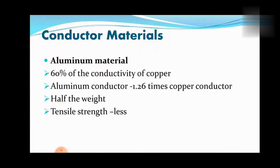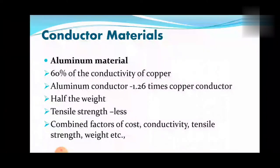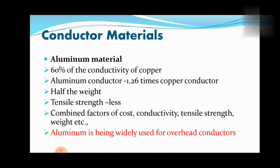Also, the tensile strength of aluminum is less than that of copper. Considering the combined factors of cost, conductivity, tensile strength, weight, etc., aluminum has an edge over copper. Therefore, aluminum is being widely used for overhead conductors.